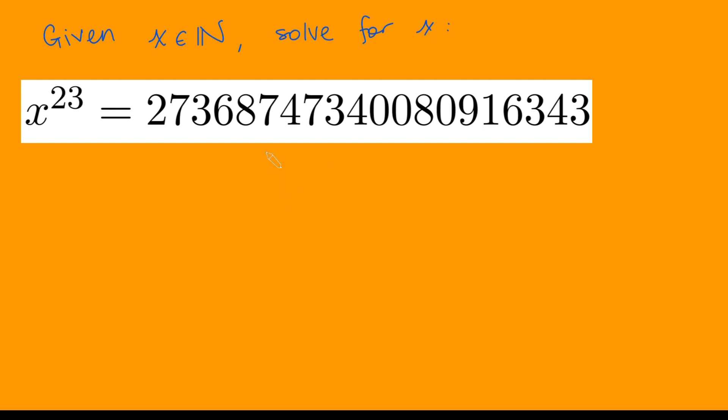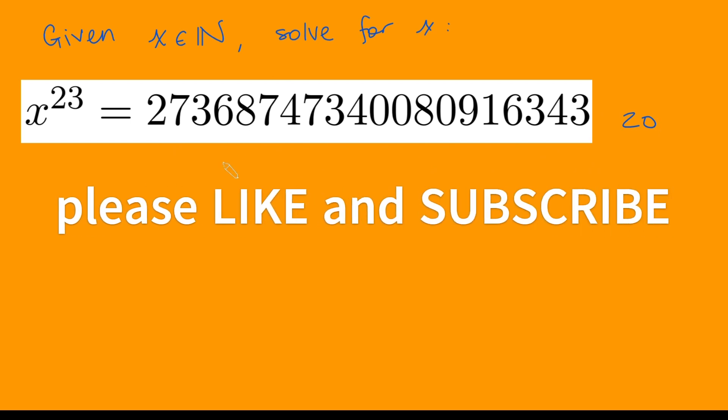So first things first, how many digits does this number have? I'm going to save you the trouble of counting. It's 20. So what does this tell us about x? This means that x must be less than 10.